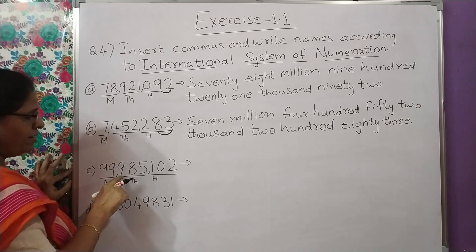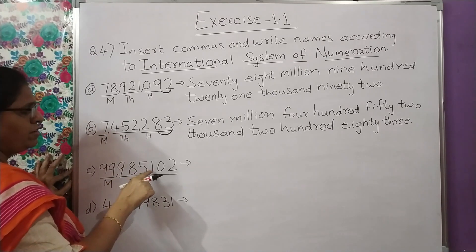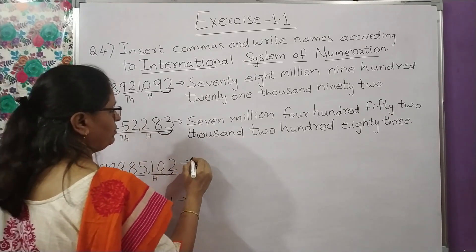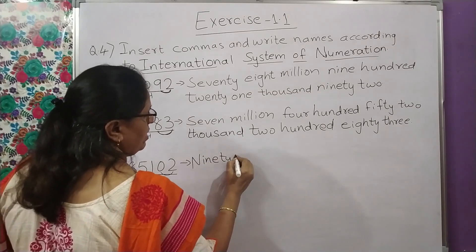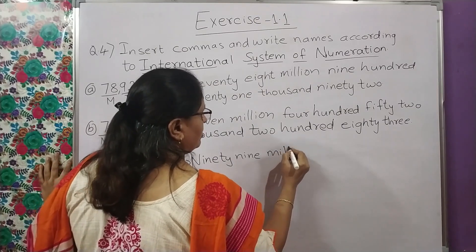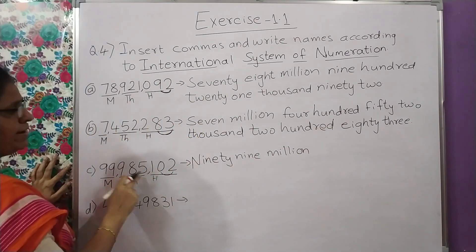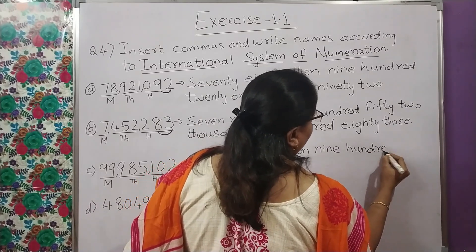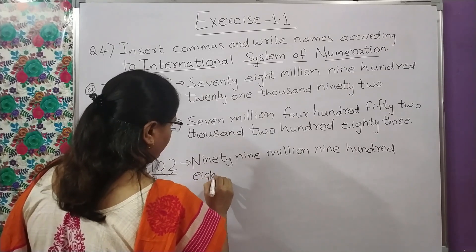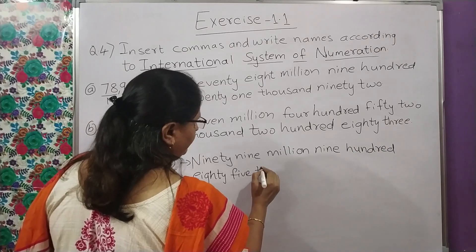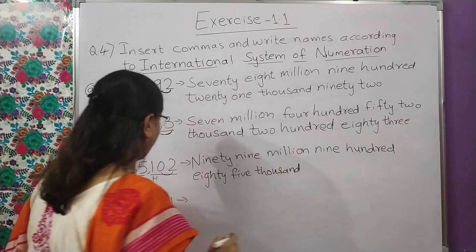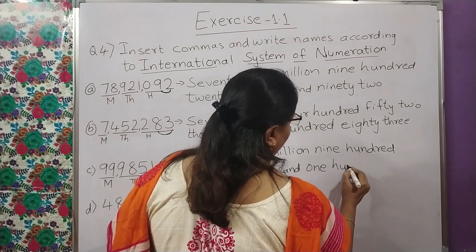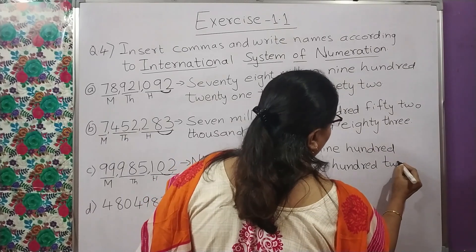Yahan 99 million, 985 thousand, 100 — aur sirf 2 hai, toh directly 2 likhenge. Number name: 99,985,102.